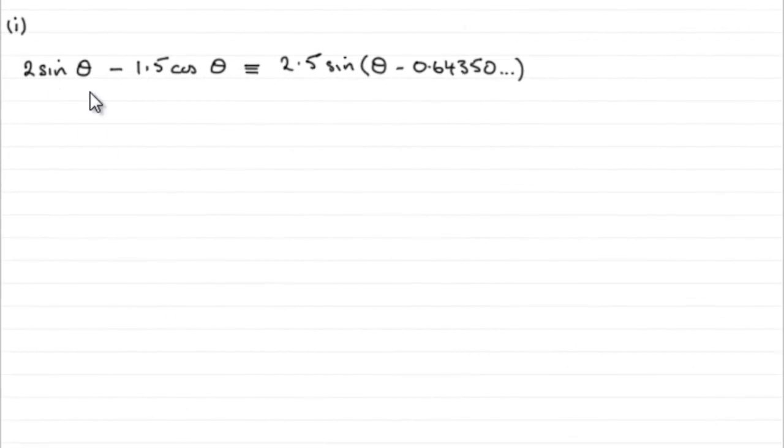Okay, so for this part then, we've got to find the maximum value of 2 sine theta minus 1.5 cos theta. And we saw that this was identical to r sine theta minus alpha, where r was the 2.5 and alpha was the 0.64 radians.